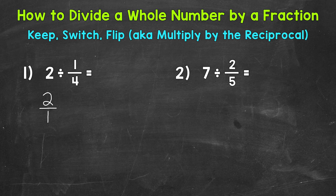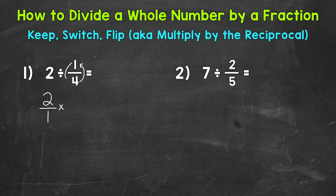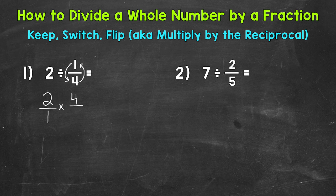Now the purpose of this, we want to have a numerator and a denominator. So we kept the value of two there. We just put it in fractional form. Then we switch from division to multiplication. And since we switched to the inverse or opposite of division, we're going to need to flip the second number or fraction. In the case of number one here, we have a fraction. So the denominator is now going to be the numerator, and the numerator is now going to be the denominator. So we have four over one.